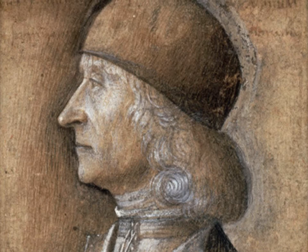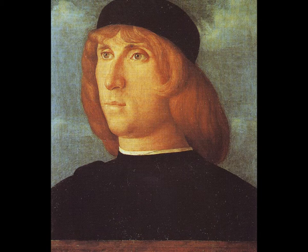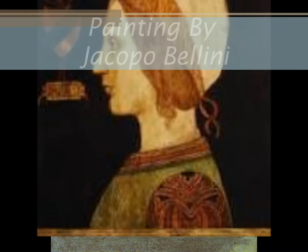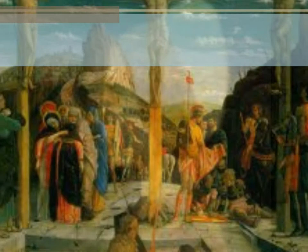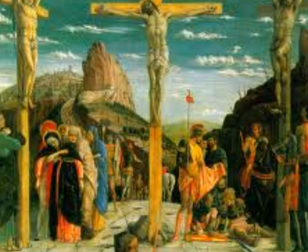Bellini was not isolated from other artists across Europe. He studied the style of Northern European painters, and also his pupils helped him further his own skills. His early works were similar to his father's Jacopo and brother-in-law's Mantegna, especially with its delineated figures and rocky landscape. Mantegna was an influence on Bellini, and his art style was supremely structural with bold contour lines.